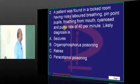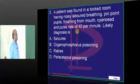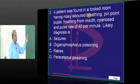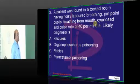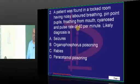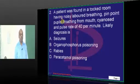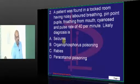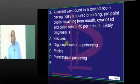A patient is found in a locked room with noisy labored breathing, pinpoint pupils, frothing from the mouth, along with bradycardia. What is your diagnosis? Excessive cholinergic activity due to organophosphate poisoning is what you have to basically remember.